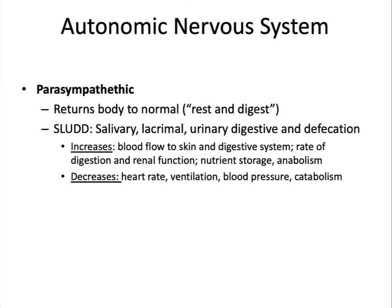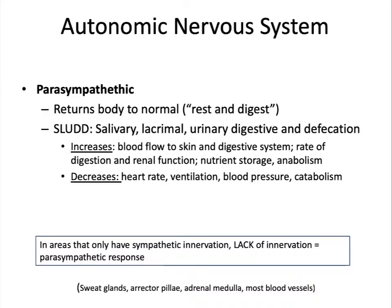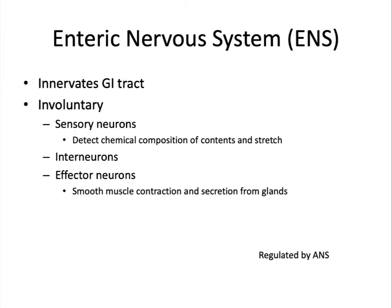Sometimes you get a parasympathetic response because there is a lack of sympathetic stimulation. Some examples of effectors that only use sympathetic innervation are the sweat glands, the erector pili, the adrenal medulla, and most of your blood vessels. Some textbooks, yours included, will break out a third subdivision of the autonomic nervous system — the enteric nervous system, or ENS. This is associated with digestive functions and is regulated by the autonomic nervous system.